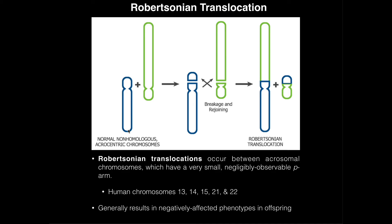In a Robertsonian translocation, chromosome 14 breaks in the middle of the P arm, and chromosome 21 breaks a small distance into the Q arm. The two large fragments from chromosomes 21 and 14 then join each other. You end up with one really tiny piece that is much smaller than shown here, and then this large conglomerate chromosome made of chromosomes 14 and 21 fused together.